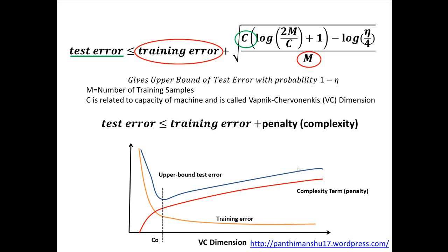For an efficient classifier, it is necessary that the value of test error should be minimum. To achieve this, we have to limit VC dimension such that sum of training error and penalty term is minimum. This problem is also known as structural risk minimization or SRM.